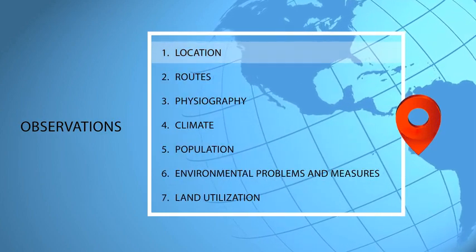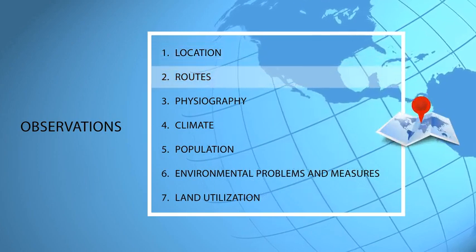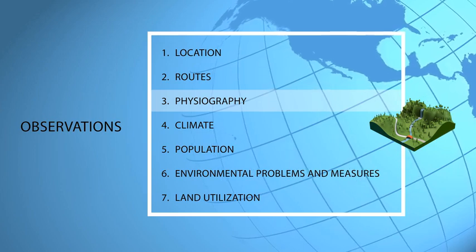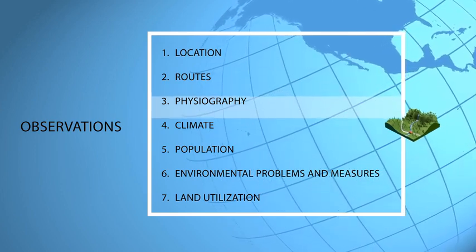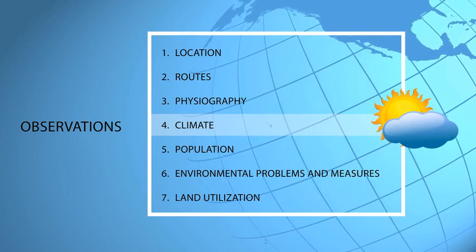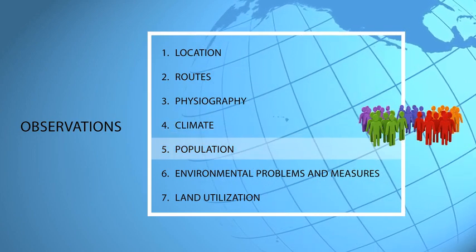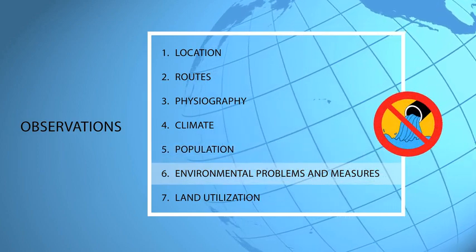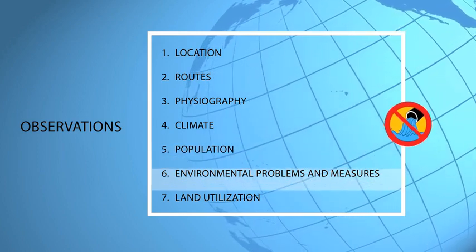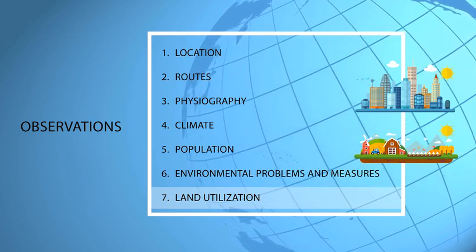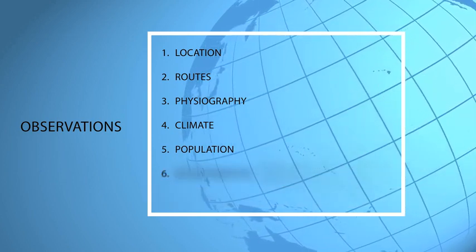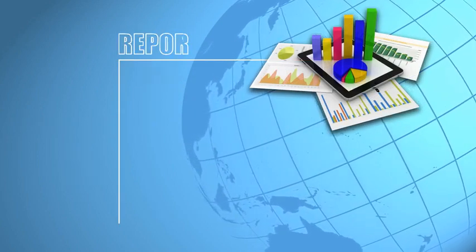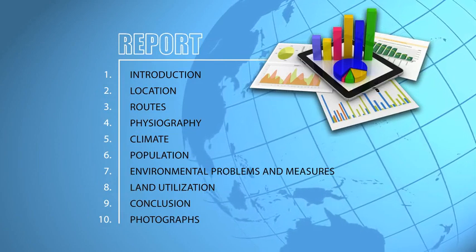First, Location. Second, Routes. Third, Physiography. Fourth, Climate. Fifth, Population. Sixth, Environmental Problems and Measures. Seventh, Land Utilization. When we list all these observations in writing and add our own conclusions and photographs, it becomes a report.